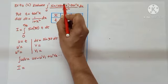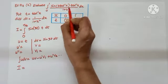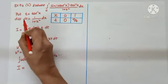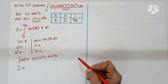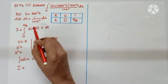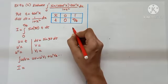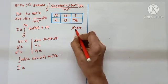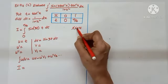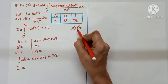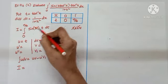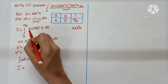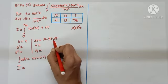After substitution, sin(3·tan⁻¹x) becomes sin(3t), tan⁻¹x becomes t, and dx/(1+x²) becomes dt. Now we have integral of t·sin(3t)·dt from 0 to π/4. Applying ILATE: inverse not present, logarithm not present, but algebraic is present. So choose t as u and sin(3t)dt as dv.